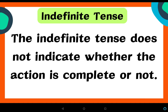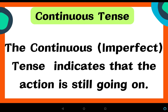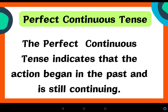The indefinite tense does not indicate whether the action is complete or not. The continuous tense indicates that the action is still going on. The perfect tense indicates that the action is complete, finished, and perfect. The perfect continuous tense indicates that the action began in the past and is still continuing.